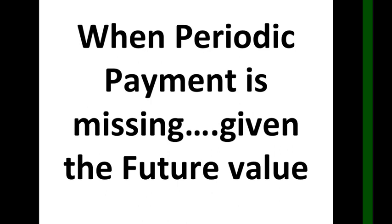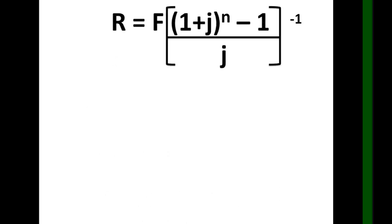The first part is when the periodic payment is missing given the future value. The formula that we're going to use is: r equals F times the quantity (1 plus j) raised to n minus 1, over j, raised to negative 1.